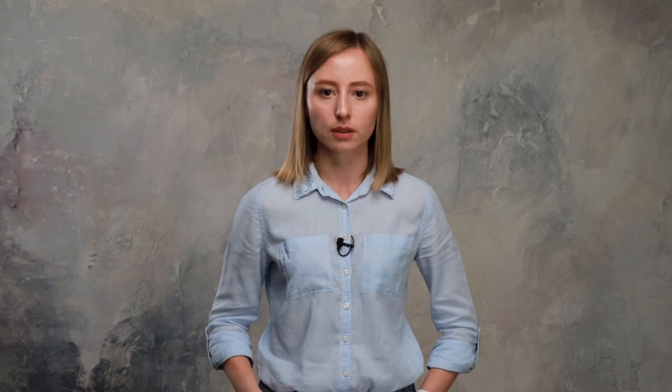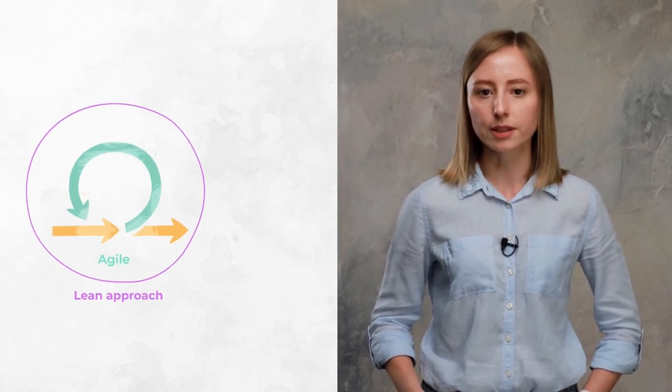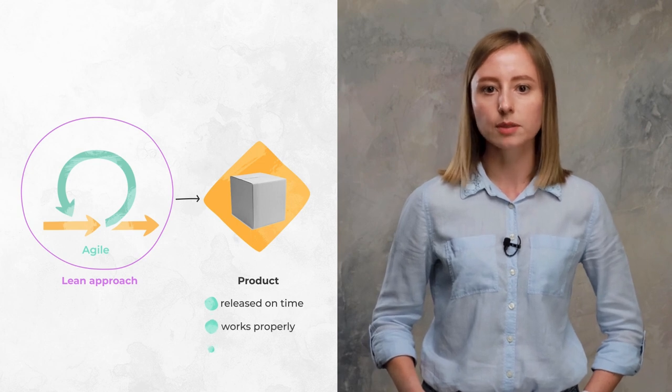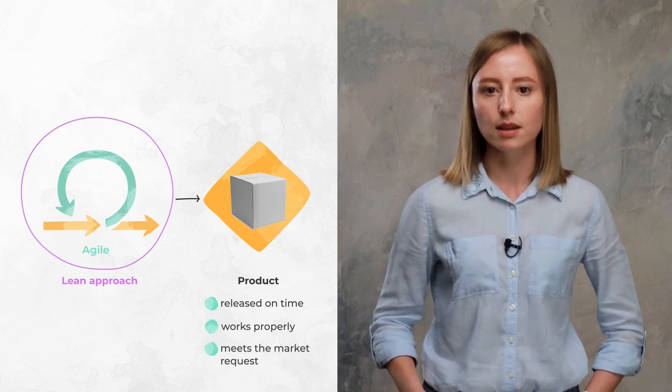Let's recap. When you run product discovery and follow lean principles, you help your team build only what they should be building, rather than chasing cool features. This is how lean complements agile — while agile emphasizes working software, the lean approach is all about bringing value to the customer. If we put them together, we'll get a product that is released on time, works properly, and meets a market request.